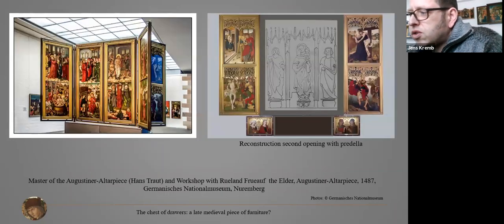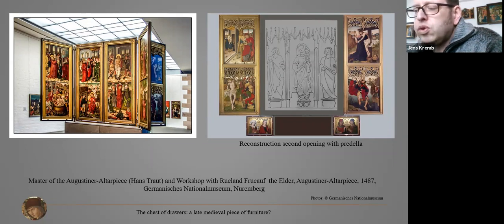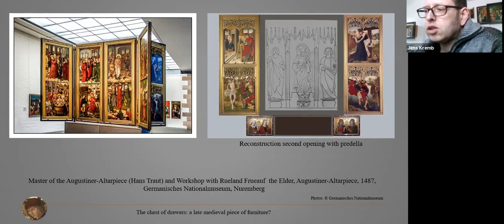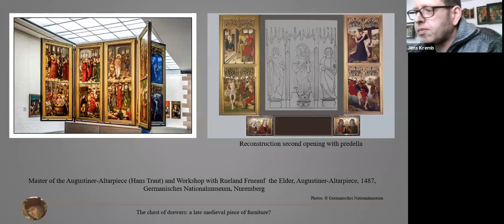It was one day when I was dealing with depictions of furniture on late medieval paintings when I stumbled over the so-called Augustina Altarpiece. The altarpiece, now kept in the Germanisches Nationalmuseum in Nuremberg, was originally the high altar of the Augustina Cloister Church Saint Vitus in Nuremberg. It is an altarpiece with in total three pairs of wings painted on both sides. The center part is lost but reconstructed with sculptures. The altarpiece is dated by inscription to 1487 and attributed to the workshop of the Master of the Augustina Altarpiece, possibly identified with Hans Traut.